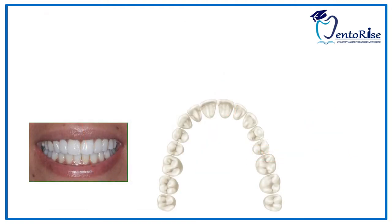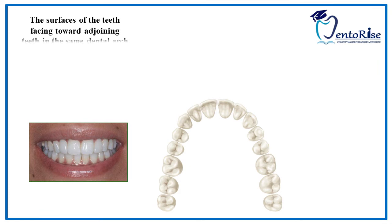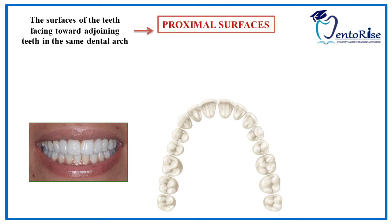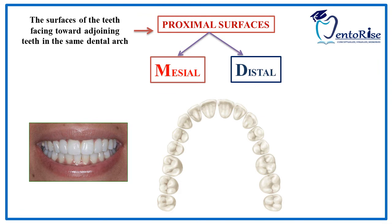Let's discuss about the surfaces present on the side which contacts the adjacent tooth. These surfaces are called the proximal surfaces or the proximate surfaces. There are two proximal surfaces present in a tooth: the mesial surface and the distal surface. To understand this, we need to draw a median line of the face passing through the center of the face between the central incisors of the maxilla and the mandible through their point of contact, represented in the figure with the help of a green line.